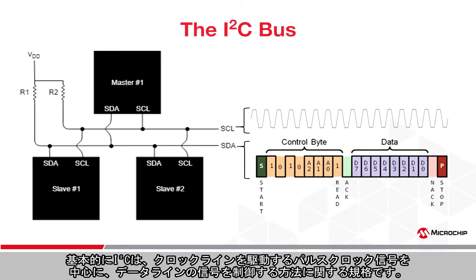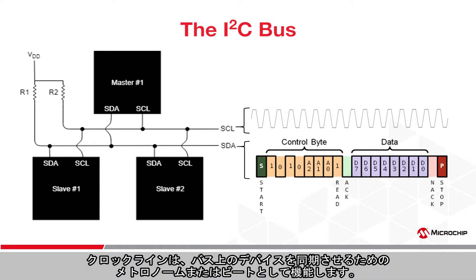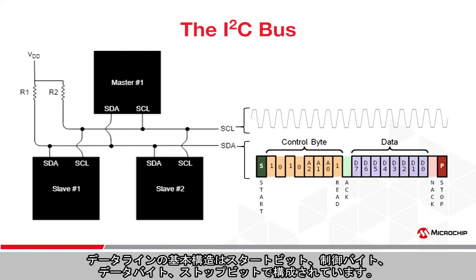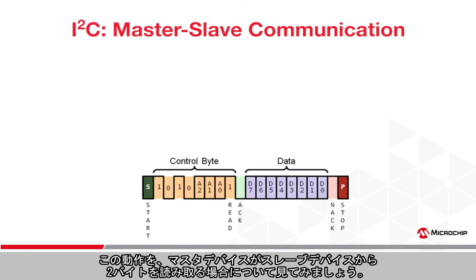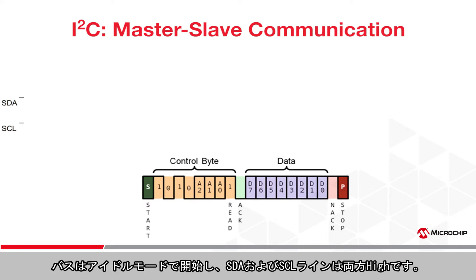Fundamentally, I2C is simply a standard for how we manipulate the signal on the data line around the pulsating clock signal driving the clock line. The clock line acts as a metronome to keep devices on the bus on the same page. The basic structure of the data line consists of a start bit, a control byte, a data byte, followed by a stop bit. Each transmission is always followed by an acknowledgement (ACK) or non-acknowledgement (NACK). Let's see it in action for a master device reading two bytes from a slave device.